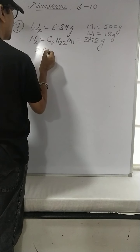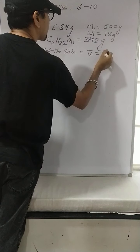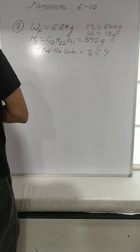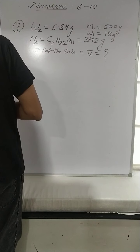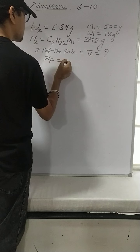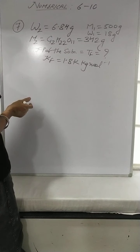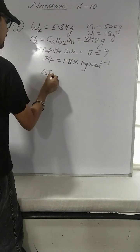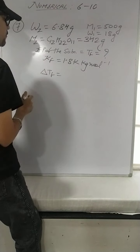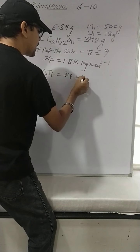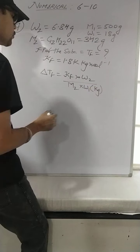Freezing point of the solution means we need Tf. The molar depression constant for water is given: Kf = 1.86 K·kg/mol. First find Delta Tf. Since this is a non-volatile solute, i = 1. So Delta Tf = Kf × (W2/M2) × (1000/W1), where W1 must be in kg.